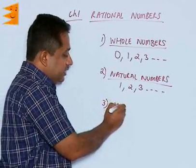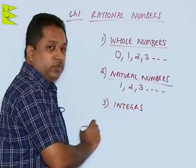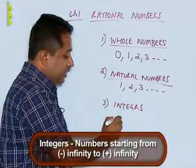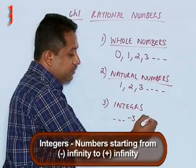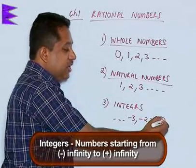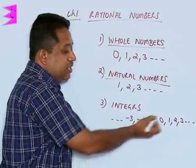Then we come to integers. Integers also include negative numbers. You have from minus infinity to positive infinity. So you have negative numbers, you have 0 in between and followed by positive numbers. This is the integers.